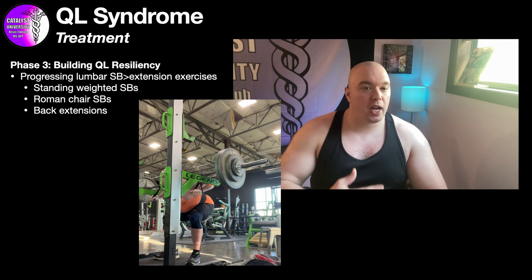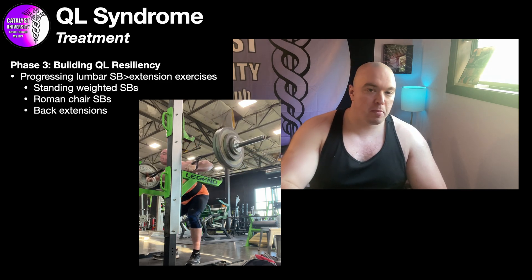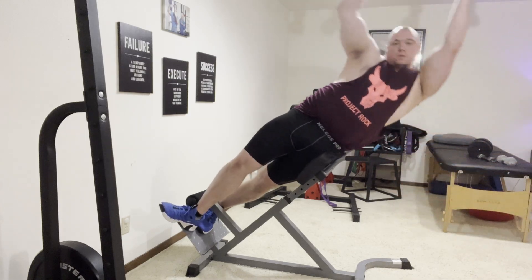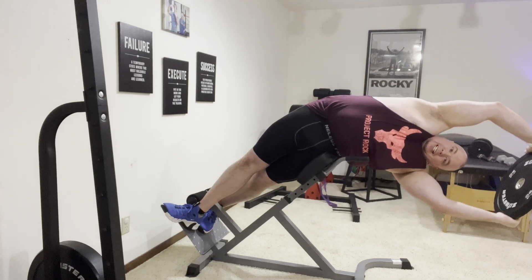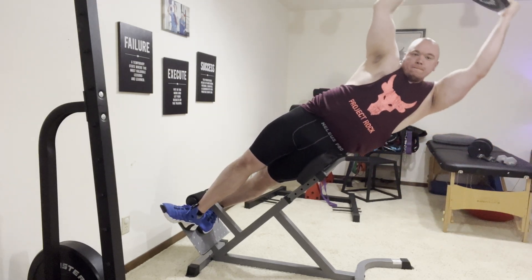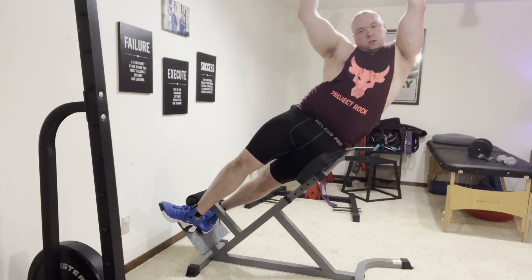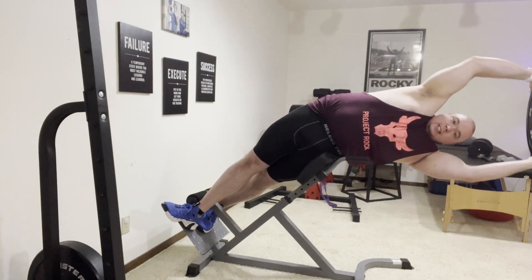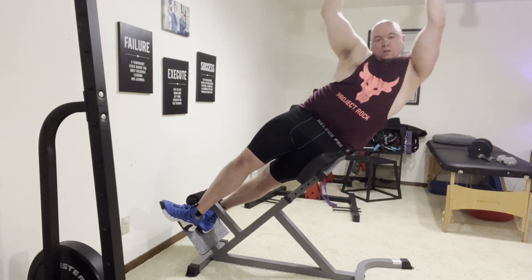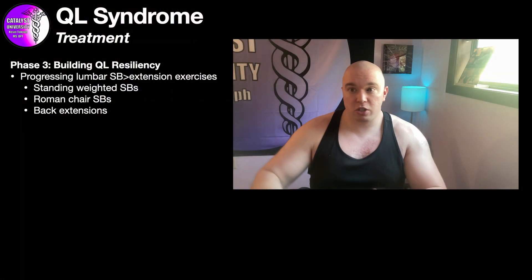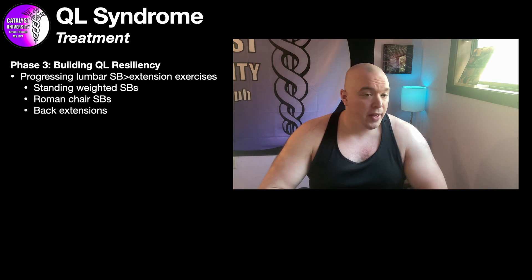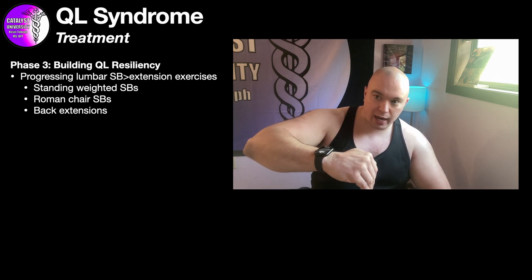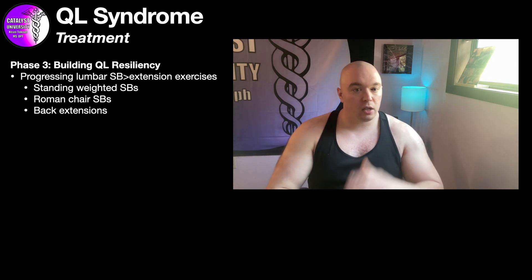We want to focus on progressing lumbar side bending and extension exercises with a little more emphasis on side bending — standing weighted side bends with a kettlebell or dumbbell are my favorite way. Roman chair side bends are an absolutely phenomenal exercise for targeting the obliques and also the QL — some people even call these QL side bends, though the obliques are the prime mover there. Roman chair back extensions are also great — you can start isometrically, then allow the back to flex and extend, working the spinal erectors and QL concentrically and eccentrically.